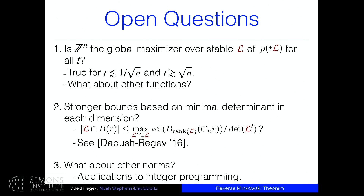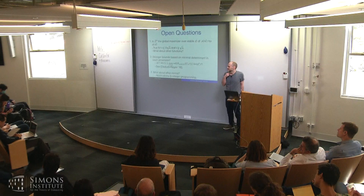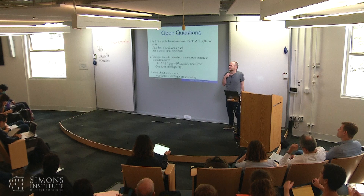Daniel's original motivation was integer programming. If you could prove something analogous to reverse Minkowski for arbitrary norms — replacing the ball by a general convex body — you might get fast algorithms for integer programming. For general convex bodies, the constant CN in front of R is at least n^(1/4), possibly as large as n. What goes wrong is you can tailor your body to the lattice by taking the convex hull of lattice points, which feels like cheating. These questions remain open.